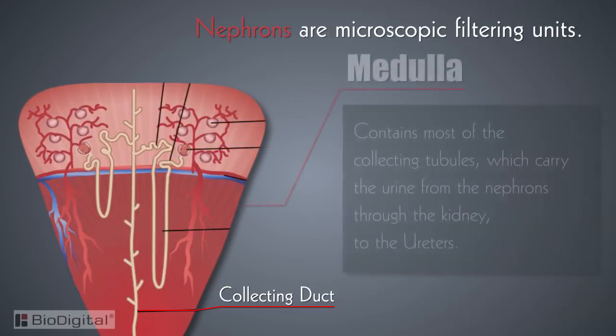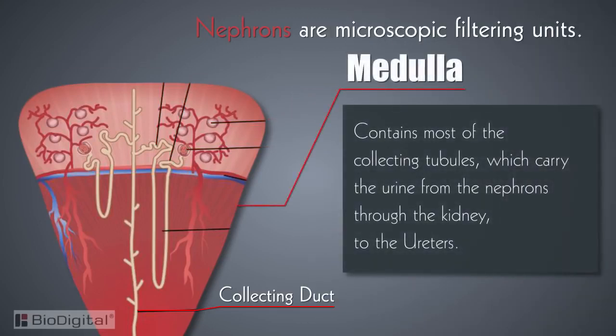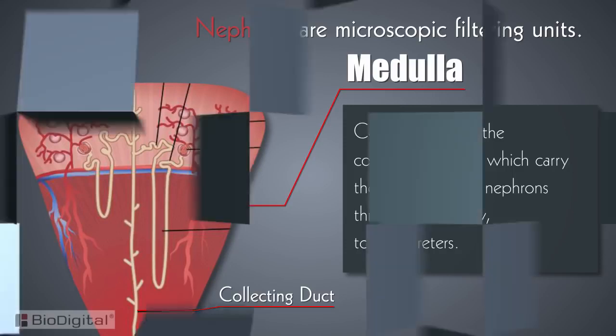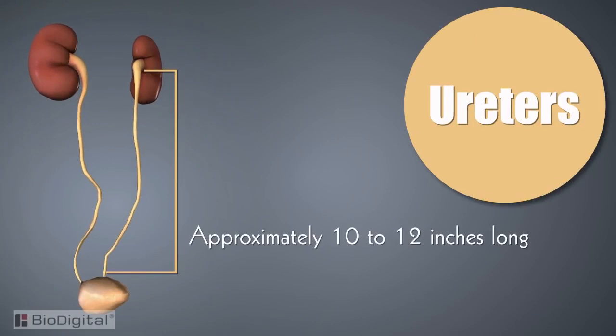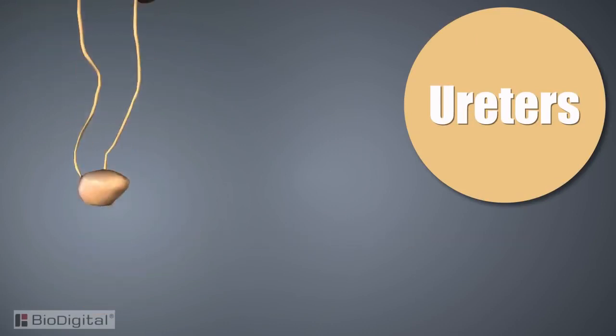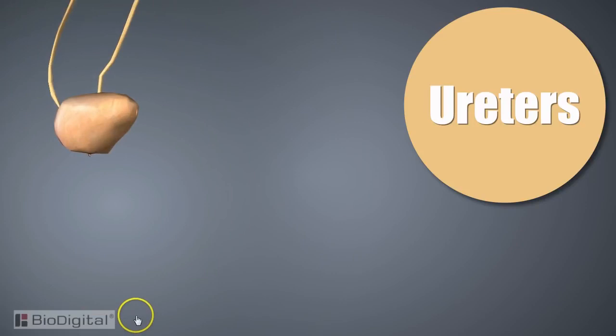The medulla is the inner section of the kidney. It contains most of the collecting tubules, which carry the urine from the nephrons through the kidney to the ureters. The ureters are two muscular tubes approximately 10 to 12 inches long, extending from the renal pelvis of each kidney to the bladder.